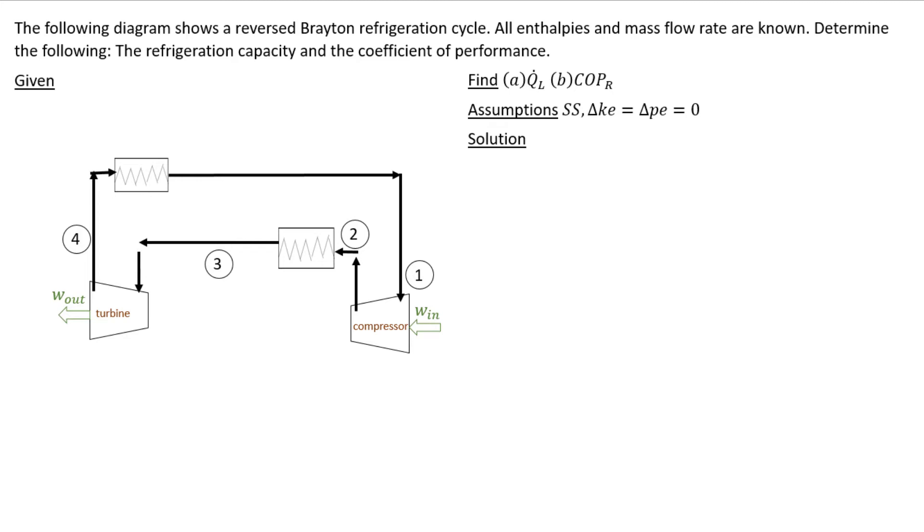We're assuming that at steady state, kinetic and potential energy changes are negligible. So the first thing that we need to do is figure out where is our Q.L and where is our Q.H.